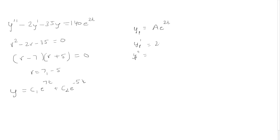The first derivative is 2a e to the 2t and the second derivative is 4a e to the 2t. Note that 2a and 4a are just constants, but we'll keep them as they are and plug everything into the equation.